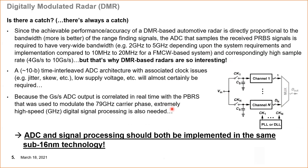Is there a catch? Yeah, there's always a catch. Since the achievable performance and accuracy of this system is directly proportional to the bandwidth — where more is better — of the range-finding signals, the ADC that samples the received signal has to have a very wide bandwidth: two to five gigahertz, depending on the configuration, compared to 10 or 20 megahertz for an FMCW-based system. So clearly this is significantly more difficult for the ADC. But as an ADC designer, that's why we're so interested in this.